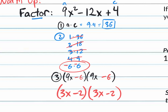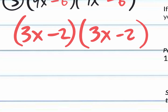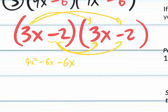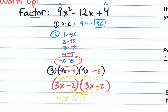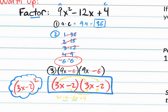On quizzes, type in the factored form with no spaces between terms. You can double-check by distributing: 3x times 3x is 9x squared; 3x times negative 2 is negative 6x; negative 2 times 3x is another negative 6x; and negative 2 times negative 2 is positive 4. Those middle values combine to give negative 12, confirming the factored form is correct. An alternative way to write this is (3x minus 2) squared, since both binomials are identical.